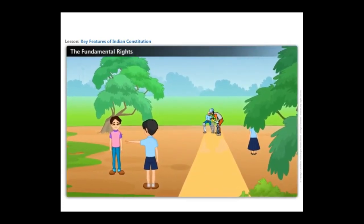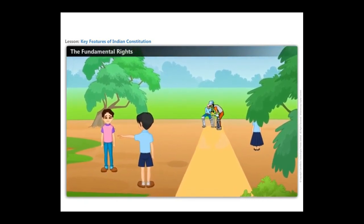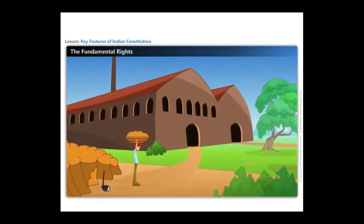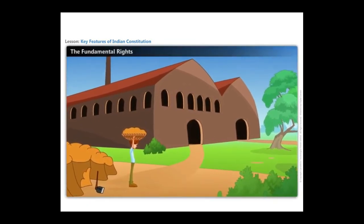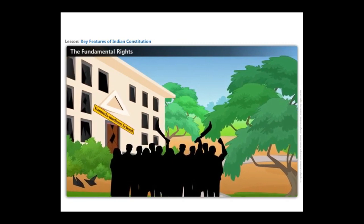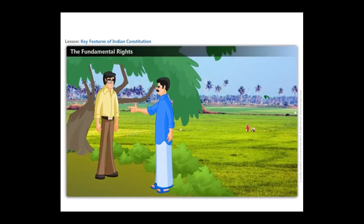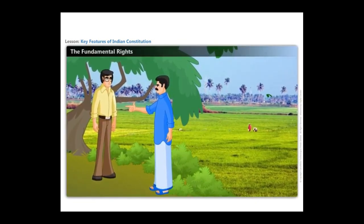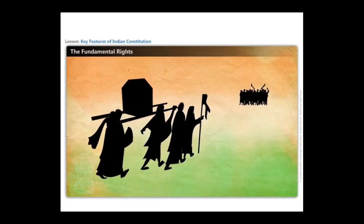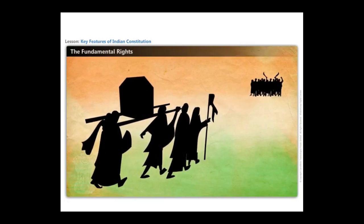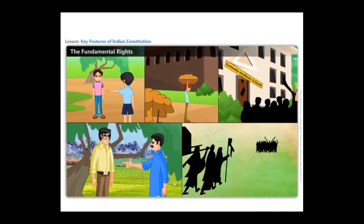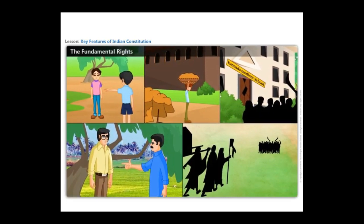Consider these instances: Ramu is not allowed to play in the public playground as he belongs to a Dalit community. A 12-year-old child is working in a brick-making factory. A group of people are not given permission to open a Kannada medium school in Tamil Nadu. Mr. Kapoor from Punjab is not allowed to construct his house in Kerala. A religious procession is not allowed to enter an area dominated by another religion. In all these examples, the rights of some individuals are violated.